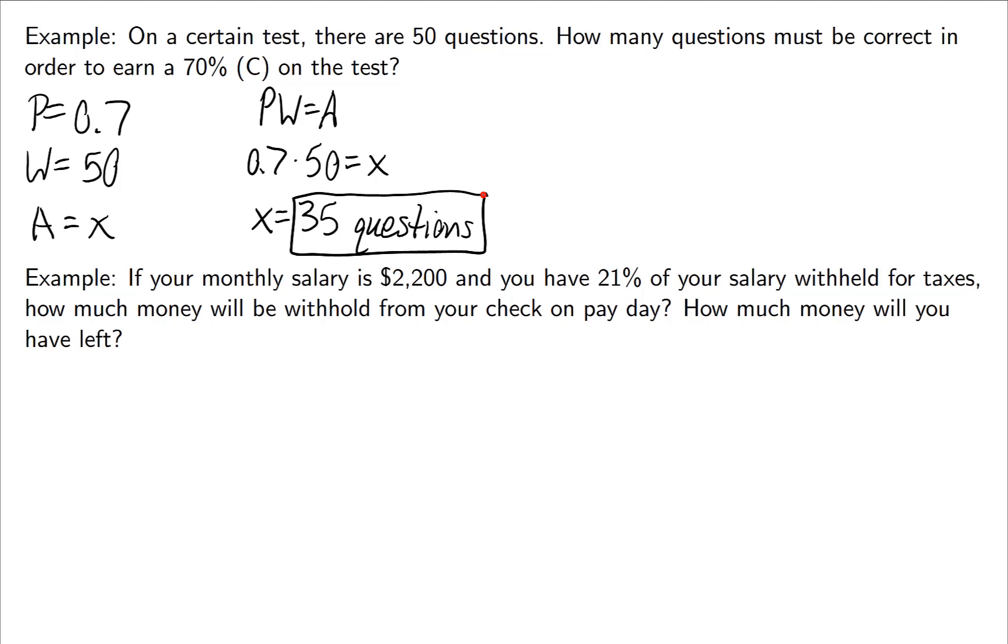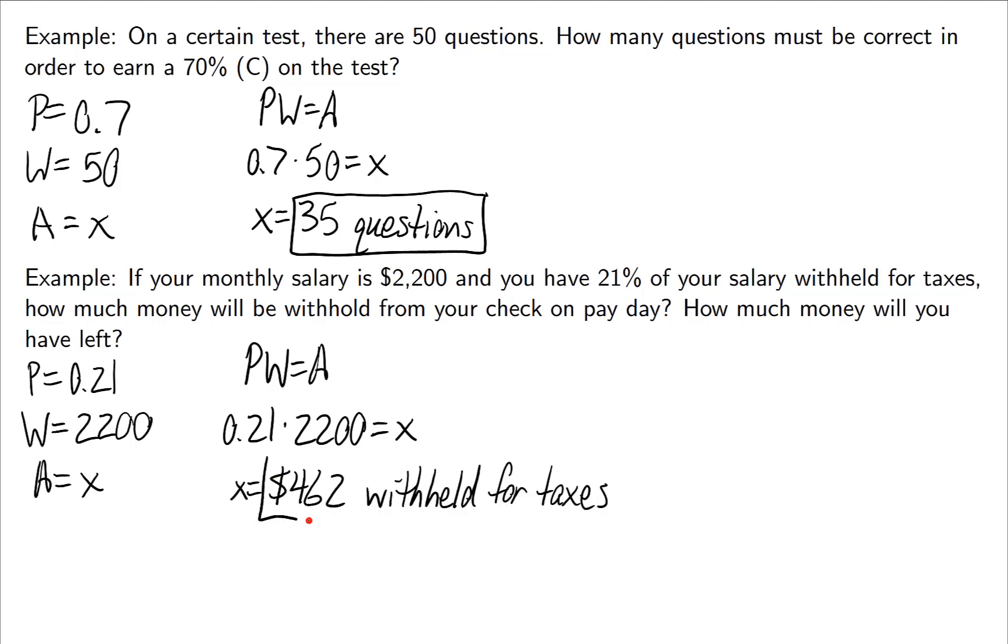Your monthly salary is $2,200 and you have a 21% withholding for taxes. We want to know how much money total will be withheld from our check and how much will we have left. Your monthly salary is the 2200. That's the whole. The percent is also given. So the percent would be 0.21 if we write it as a decimal. The whole would be the 2200. And again, the amount for taxes is unknown. If we use the formula, PW equals A, we'll use 0.21 for P, 2200 for W. And then if we simply calculate this, we will find out how much taxes you're paying on your paycheck. I get $462 and it would be nice to specify that this is the amount withheld for taxes.